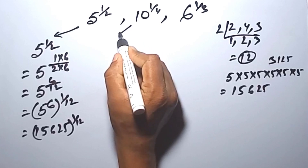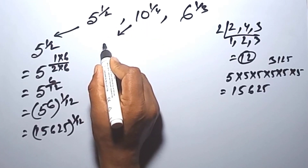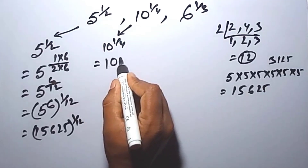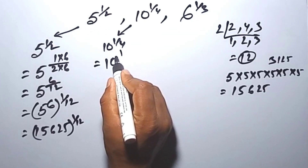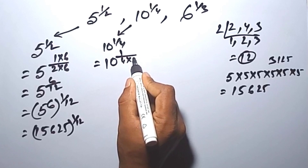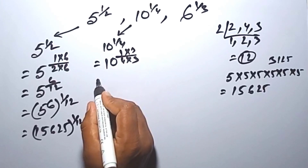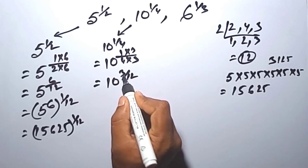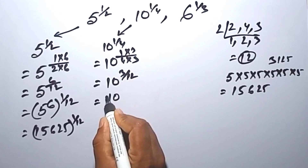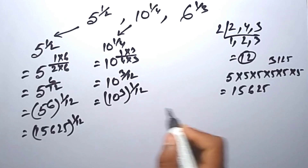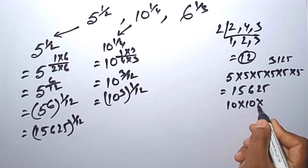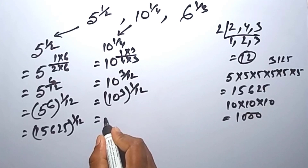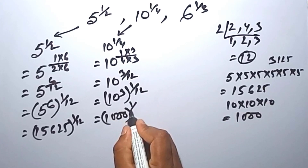Similarly, you can find the value of this. So this value — we make this the 12. How can we make this the 12? Similarly, this is the value of this: 10 into 10 into 10. So 10 into 10 is 100, 100 into 10 is 1000. So you can write this is 1000 to the power of 1 by 12.